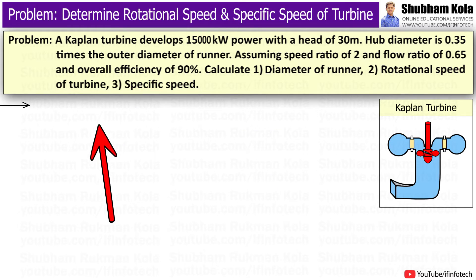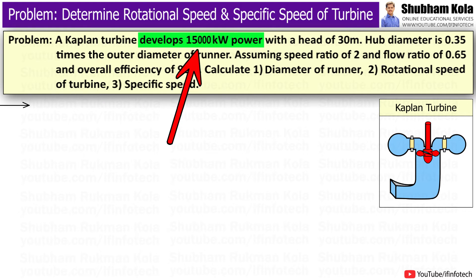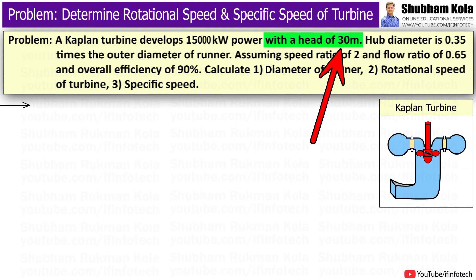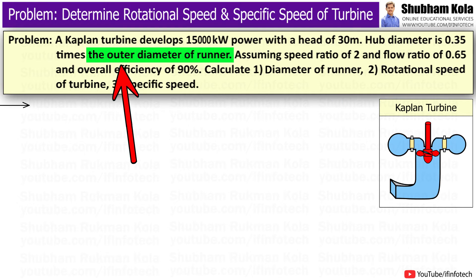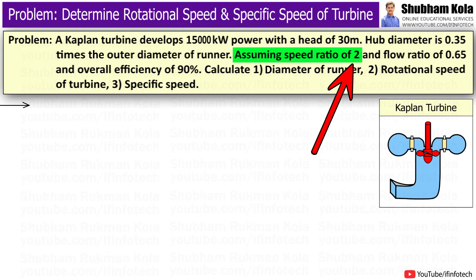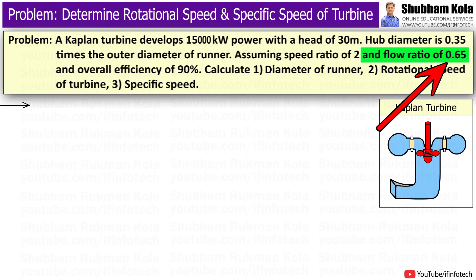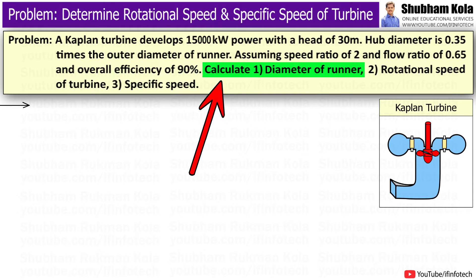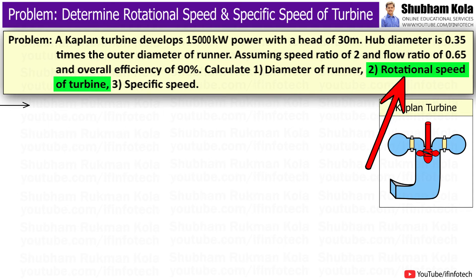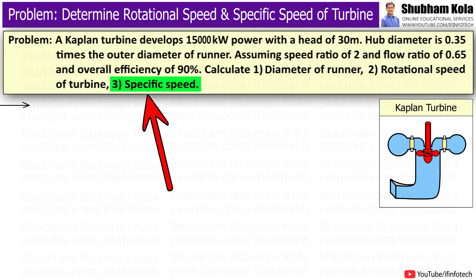The question is given as: a Kaplan turbine develops 15,000 kW power with a head of 30 meters. The hub diameter is 0.35 times the outer diameter of the runner. Assuming a speed ratio of 2, flow ratio of 0.65, and overall efficiency of 90%. Calculate the diameter of the runner, rotational speed of the turbine, and specific speed.